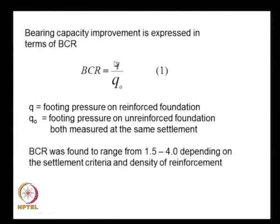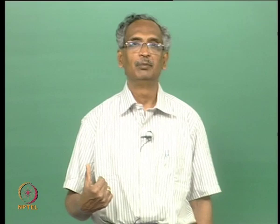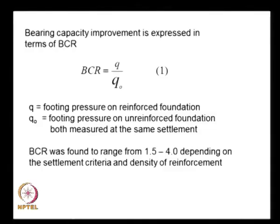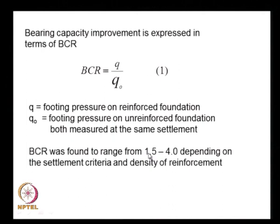The entire premise of bearing capacity improvement is defined in terms of the bearing capacity ratio BCR, that is q/q₀, where q is the footing pressure on the reinforced foundation and q₀ is the footing pressure on the unreinforced foundation at the same settlement. Through experimental means, Binquet and Lee and other researchers like Tatsuoka and Huang found that BCR ranges from 1.4 to 4, depending on settlement criteria and reinforcement density.